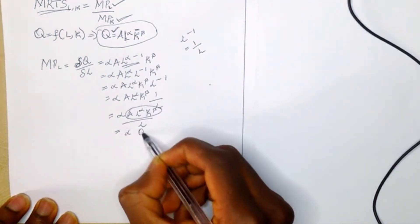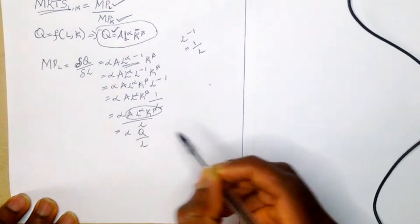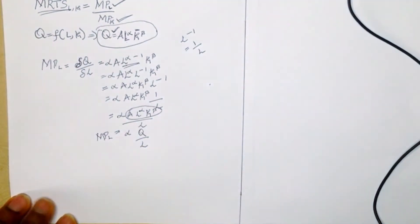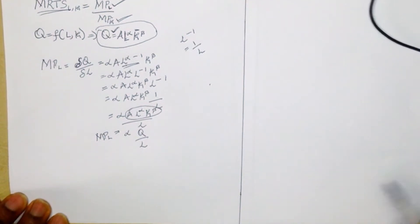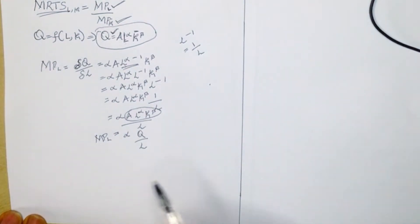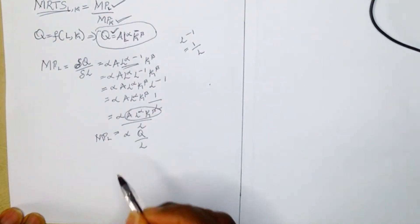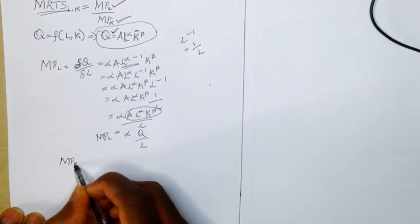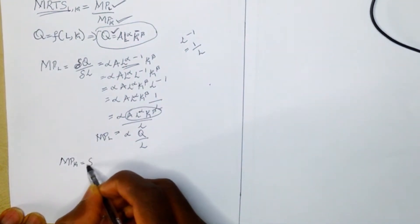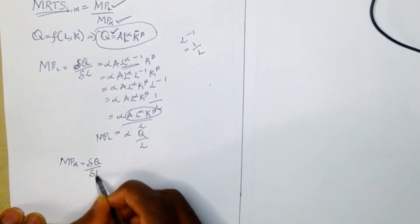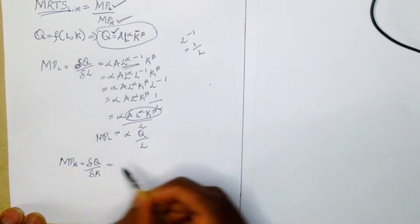Since A times L^alpha times K^beta equals Q, we can slot it in and say the marginal product of labor equals alpha times Q over L. So our marginal product of labor is alpha Q/L. Now we can solve for the marginal product of capital, which equals the partial derivative of Q with respect to K.